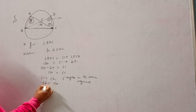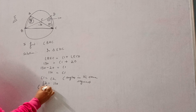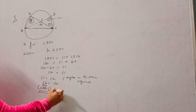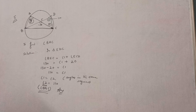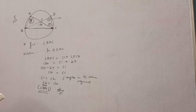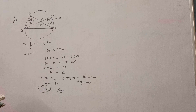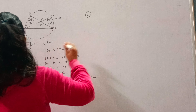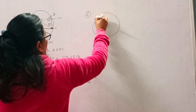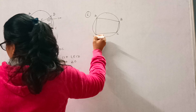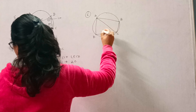Now, angle D and angle A are equal to each other — that is, angle 1 is equal to angle 2 — because they are both on the same base, meaning they are angles in the same segment. So angle 1 is 110 degrees, therefore angle 2 is also 110 degrees. That means angle BAC is 110 degrees.